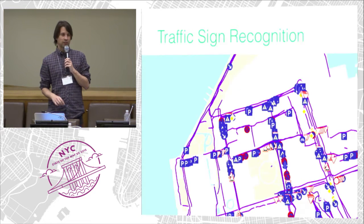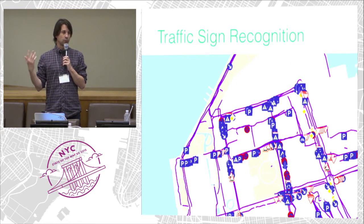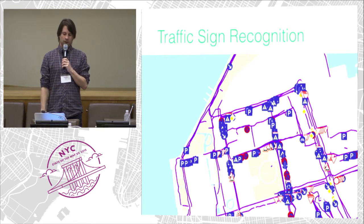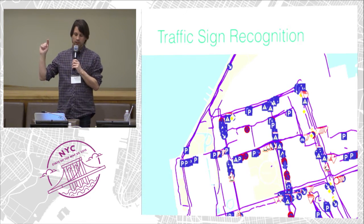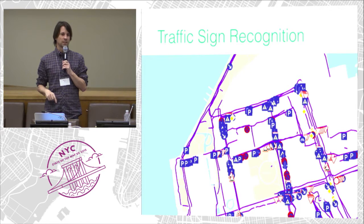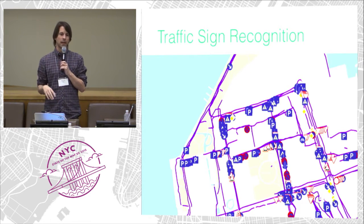When I say traffic sign recognition — we're a computer vision team, so we analyze the images, extract information, and one of those things is the traffic sign. On this map you can see icons marking where in a photo we recognized a traffic sign. It's incredibly useful information to figure out where you should go in and edit first.